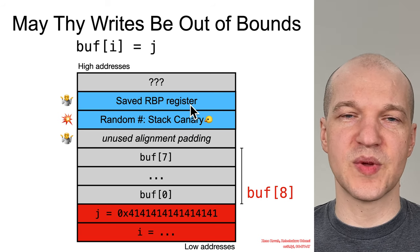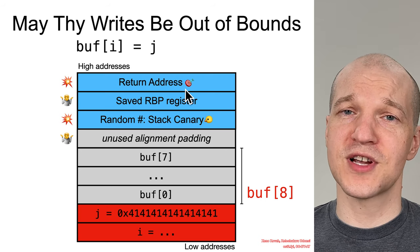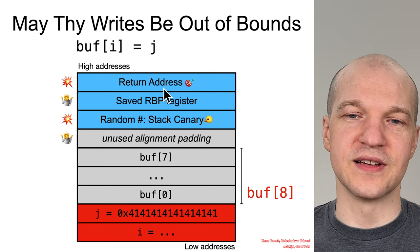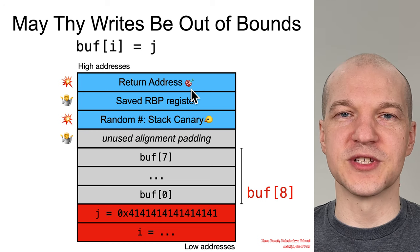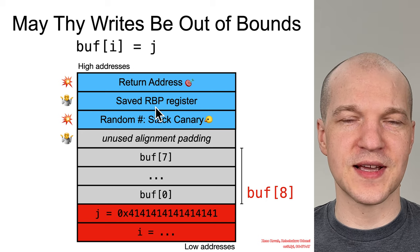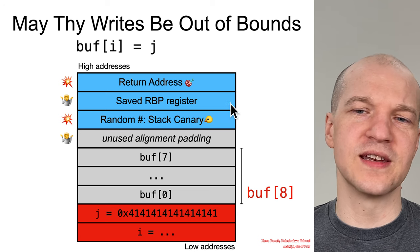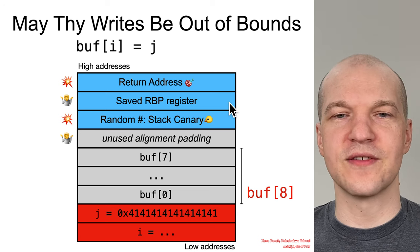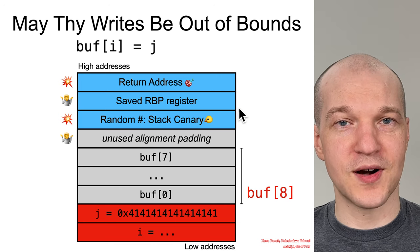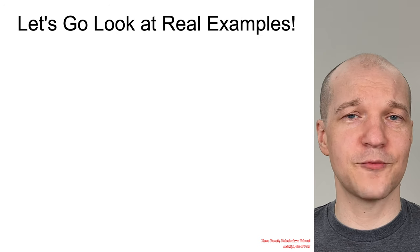Offset 11 corresponds to the saved RBP register, and beyond that is the saved return address, which is the typical target of exploitation. There have been exploits where literally a single byte overwritten into the saved RBP register will allow the attacker to take over execution. So overwrites anywhere are bad. We won't assume assembly knowledge in this class, but with that, let's go look at some real examples.